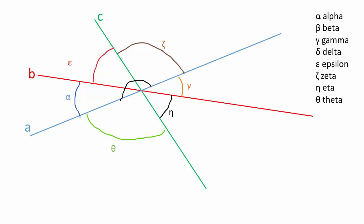Exactly. Can you do the rest of the proof? Sure. Alpha plus epsilon plus zeta is a hundred and eighty degrees, because it is one side of the line A.